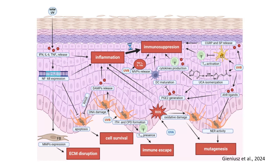UV radiation directly damages DNA, leading to the formation of cyclobutane pyrimidine dimers and CPD lesions. UVA generates reactive oxygen species, which cause oxidative damage to cellular structures and DNA. Nucleotide excision repair (NER) attempts to fix this damage, but persistent oxidative stress can overwhelm the repair mechanisms, resulting in mutagenesis.